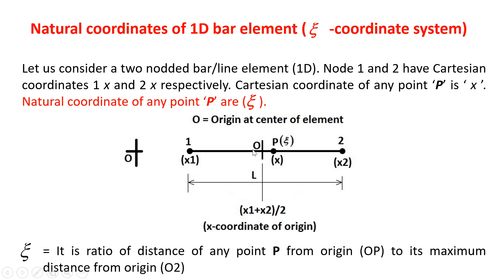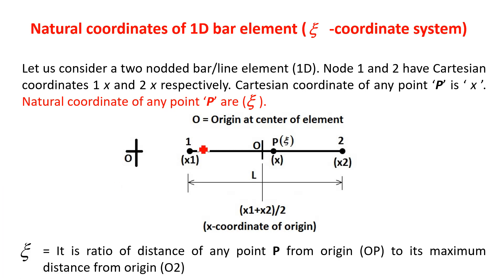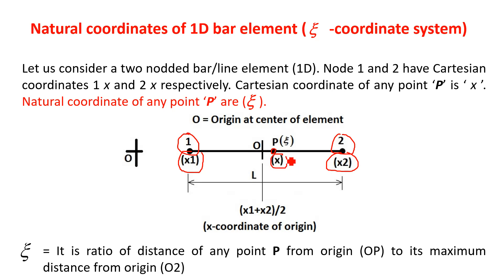Consider a similar two-noded bar element with node number 1 on the left and node number 2 on the right. The Cartesian coordinate of node number 1 is X1, and the Cartesian coordinate of node number 2 is X2. If you consider any point P, its Cartesian coordinate is X. These conditions are similar to the previous derivation.